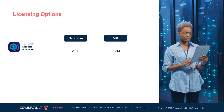Commvault Disaster Recovery is easy to scope, price, and deploy. For database replication, we license by the amount of data being replicated through DR, while VMs are licensed by the number of VMs being replicated through DR. Licensing can be sold as a subset of the enterprise where it makes sense, while service providers can receive the benefit of utility billing based on monthly high watermark usage.